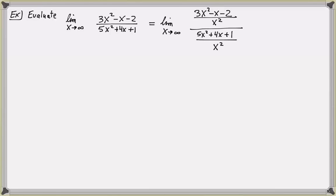I can simplify the fraction in the numerator and the fraction in the denominator by dividing each term by x squared and simplifying. In the numerator, I'll get 3x squared divided by x squared, which is 3, minus x over x squared, which reduces to minus 1 over x, and negative 2 over x squared, so minus 2 over x squared.